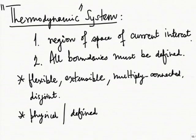A region of space of current interest with fully defined boundaries is the operational definition of a system. Whether some given something is a thermodynamic system or not, find out whether it is a proper region of space as defined by properly defined boundaries. A boundary means there is something on one side of the boundary and something on the other side — only then we call it a boundary.